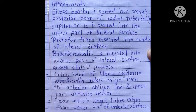For the attachments of the radius: biceps brachii is inserted into the rough posterior part of the radial tuberosity. Supinator is inserted into the upper part of the lateral surface. Pronator teres is inserted into the middle of the lateral surface. Brachioradialis is inserted into the lowest part of the lateral surface, above the styloid process.